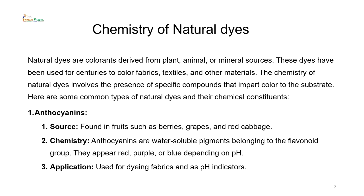Natural dyes are colorants which are derived from plants, animals and mineral sources. But remember, they are all molecules which are colored in nature. These dyes have been used for centuries to color fabrics, textiles and other materials. The chemistry of natural dyes involves the presence of specific compounds that impart color to the substrate — it is because of those specific compounds present in the natural dye that the color is responsibly coming from that. Here are some common types of natural dyes and their chemical constituents.